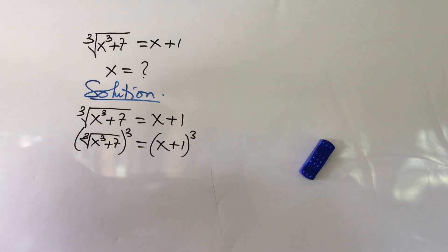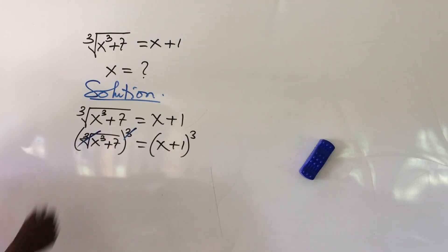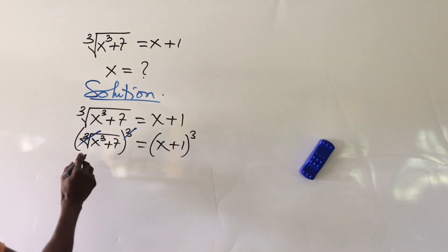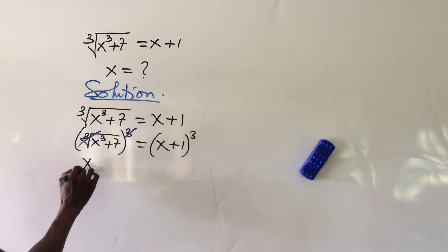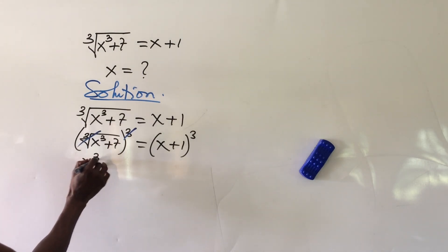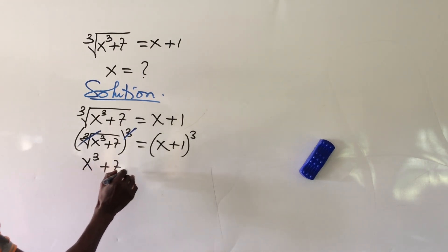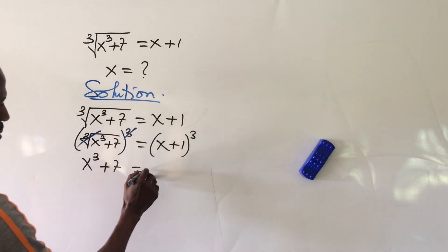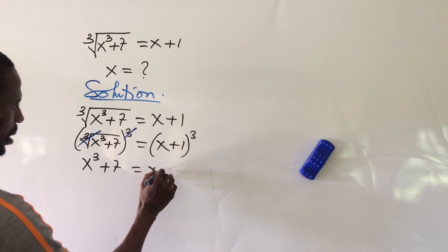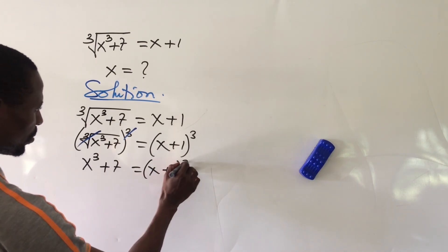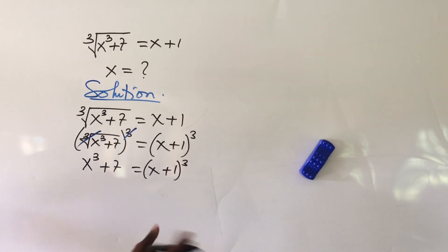The cube takes care of the cube root, so we are left with x to the power of 3 plus 7 equal to (x + 1) to the power of 3.